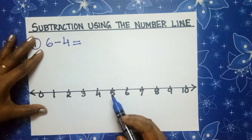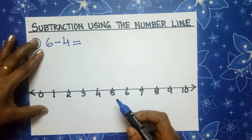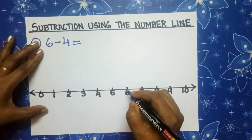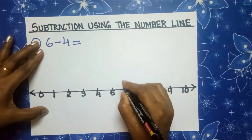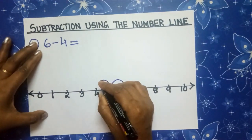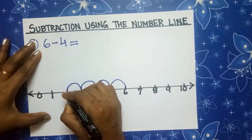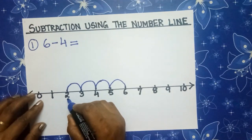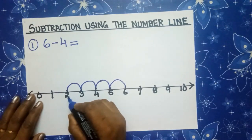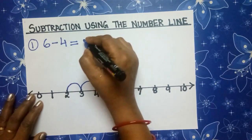6 minus — how many jumps are we going to make? 4. So we are going to jump back 4 times. From 6, we will jump backwards: 1, 2, 3, 4. What number do we get? 2. Therefore, the answer is 2. So 6 minus 4 is equal to 2.